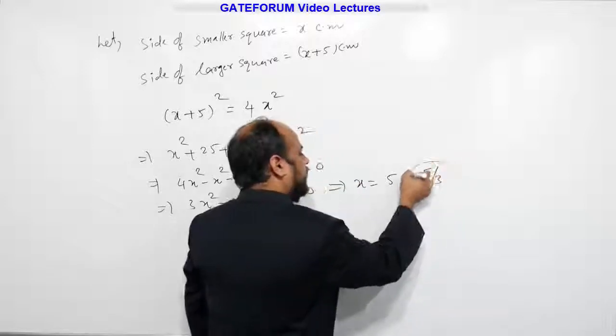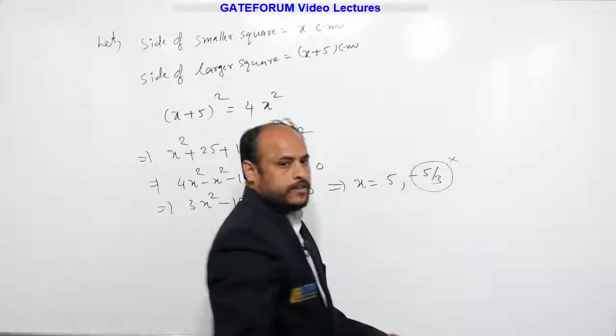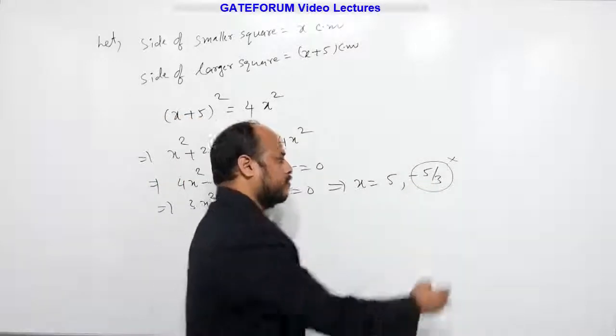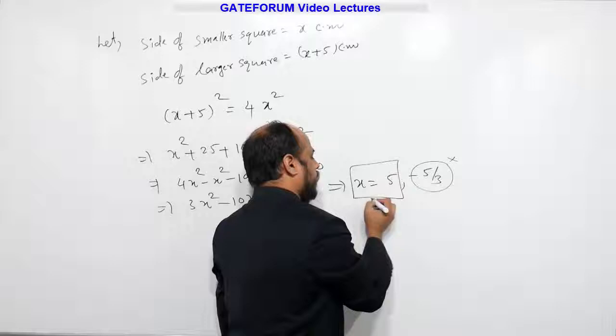But minus 5 by 3 is not possible. Side of a square is a positive value, but this is a negative value, so we should not assume this value. So x is equal to 5.